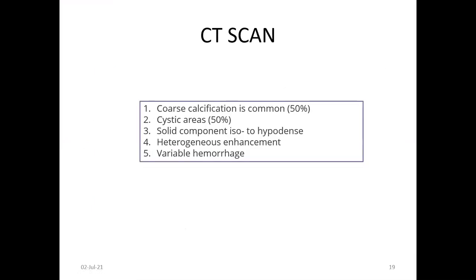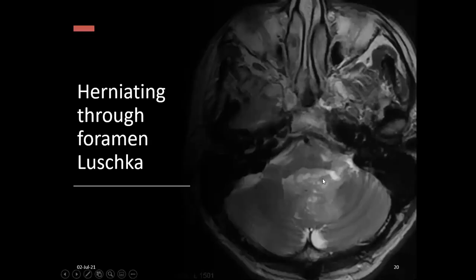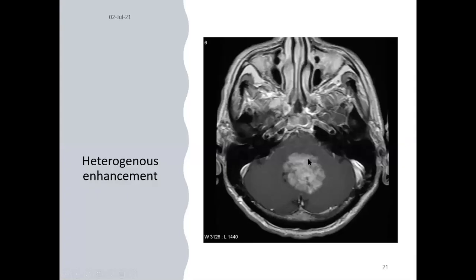On CT scan, coarse calcification is common, seen in about 50% of cases. Cystic areas, solid components, heterogeneous enhancement, and variable hemorrhage may be present. Here is a posterior fossa fourth ventricular ependymoma extending through the foramen of Luschka — this is consistent with a posterior fossa group A tumor. There is heterogeneous enhancement with hemorrhage, cystic changes, and calcification.